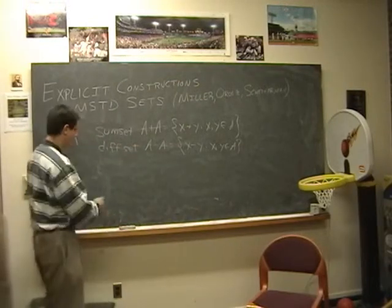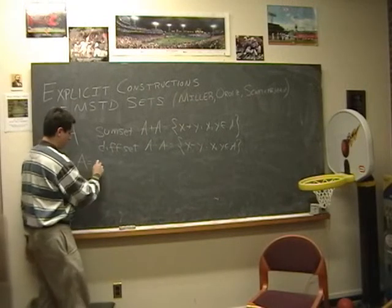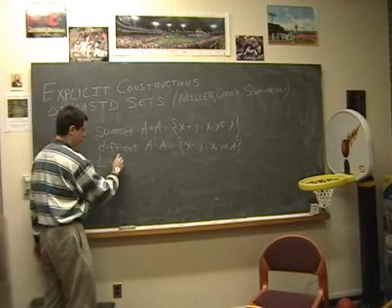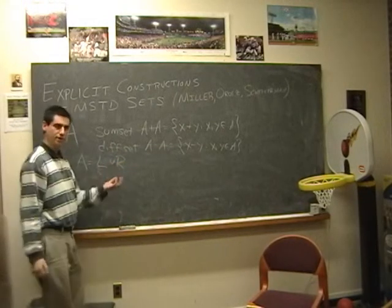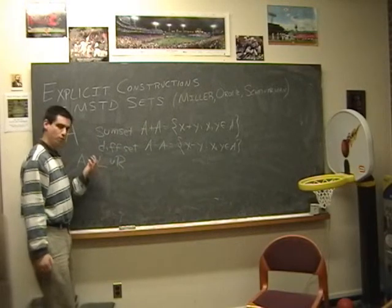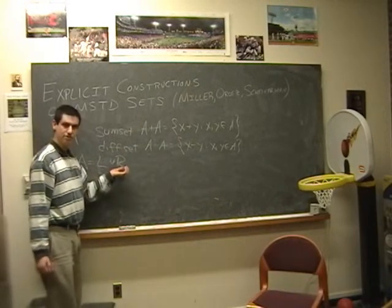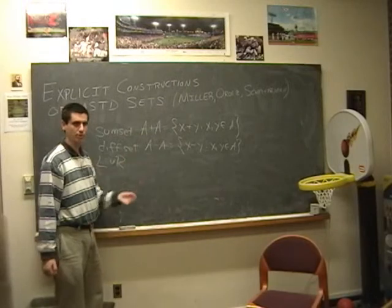We're going to start off with a set A that's more sum than differences. And we're going to write A as L union R, where L is the elements of A between one and say n/2, and R is the elements from n/2 plus one all the way up to n.